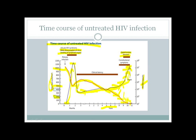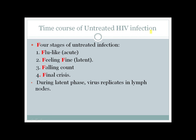As viral RNA copies get higher and higher, the CD4 count gets lower and lower, becoming extremely low, leading to severe infection and ultimately death. The time course has four stages: first, a flu-like acute stage with very high HIV RNA copies; then a latent phase where levels are low and the patient feels fine; then rapid HIV replication causing a rapid fall in CD4-positive T cells; and finally severe immunocompromisation with severe infections leading to death. During the latent phase, the virus replicates in lymph nodes.